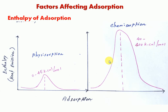In chemisorption, the attraction involves strong bond formation between the adsorbent and adsorbate. Therefore, the heat of adsorption is high — around 40 to 100 kilocalories per mole of heat is emitted. In physical adsorption, the heat of emission is very low, and only a small amount of energy is emitted. In chemisorption, the strong chemical bond formation results in a higher heat of adsorption. When 1 gram-mole of gas is adsorbed on a solid surface, heat energy is emitted.